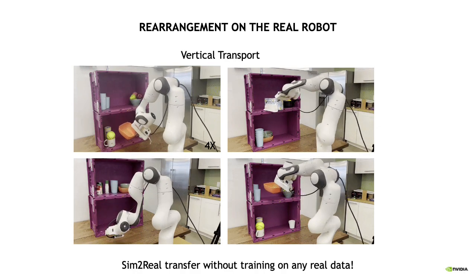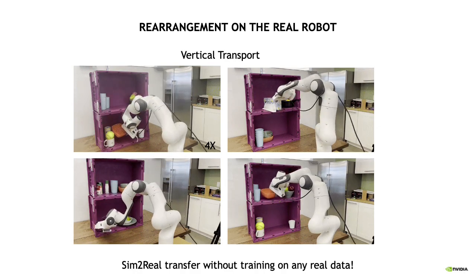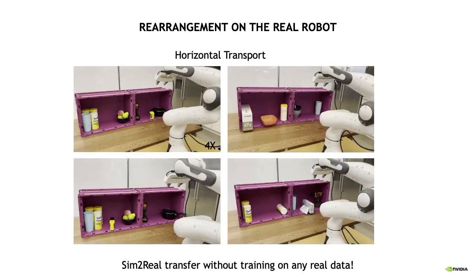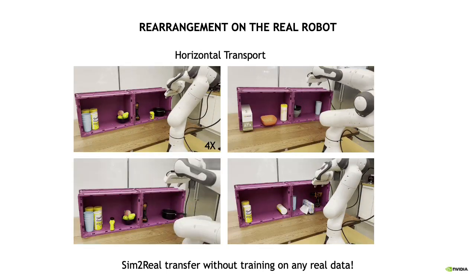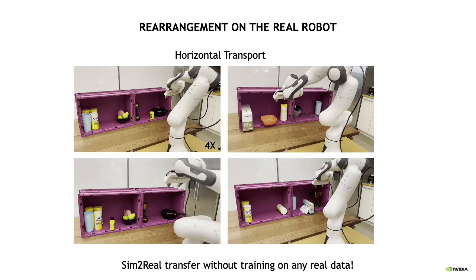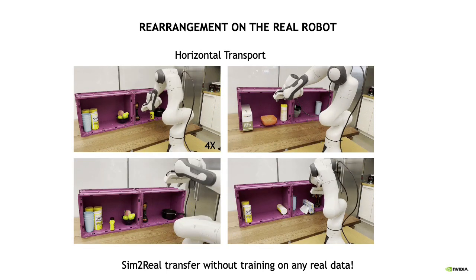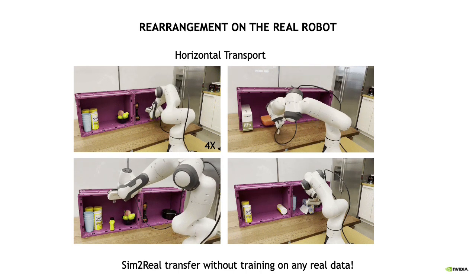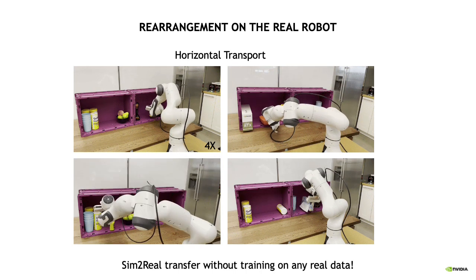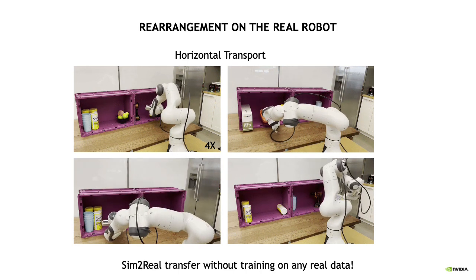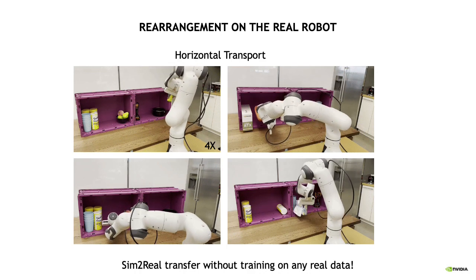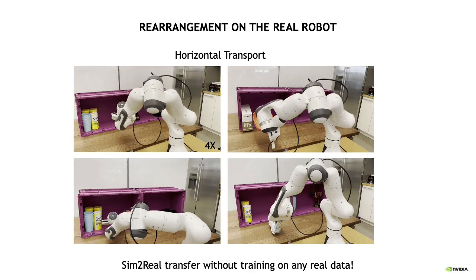Here the task is to rearrange objects when shelf compartments are stacked vertically. Here the shelf compartments are stacked horizontally. We only use a single extrinsically calibrated scene camera for collision detection. We specify the target object to grasp using instance segmentation.